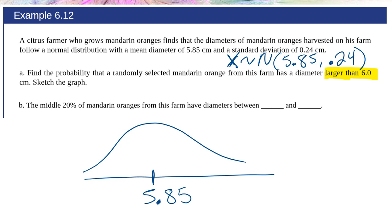So what are we trying to find? We're trying to find the probability that X is larger, greater than 6.0. Where is 6.0? I don't know exactly, but I do know that it's more than the mean, more than 5.85, so it's got to be to the right. So it's over here, 6.0.